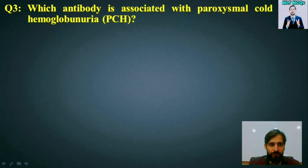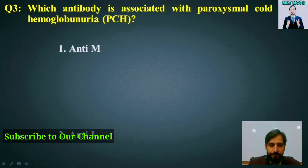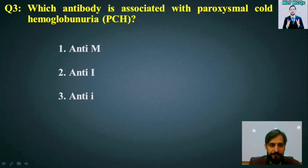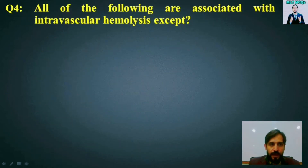MCQ number 3: Which antibody is associated with paroxysmal nocturnal hemoglobinuria (PCH)? The right answer is option number 4 — NTP antibody is associated with paroxysmal nocturnal hemoglobinuria.